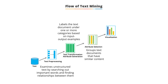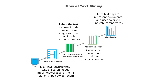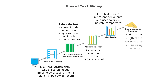Fourth, visualization technique: the process of finding relevant information is simplified by this technique. It uses text flags to represent a group of documents or a single document, and compactness is indicated using colors, helping to display textual information in a more attractive way. Fifth, summarization: this technique helps to reduce the length of the document, making it easy to read and understand the content.